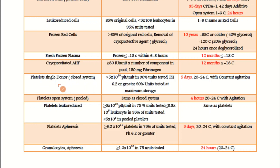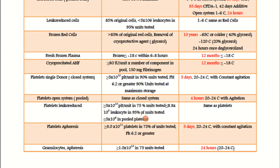For platelets — single donor closed system: there should be more than 5.0 × 10¹⁰ platelets per unit, pH of 6.2 or greater in 90% of units tested at maximum storage, and expiry is 5 days stored at 20–24°C with constant agitation. For the open system, criteria are the same, but when pooled the expiry is 4 hours after pooling, stored at 20–24°C with continuous agitation. For leuco-reduced platelets, there must be more than 5.0 × 10¹⁰ platelets in 75% of units tested, less than 8.3 × 10⁵ leukocytes in 95% of units tested.